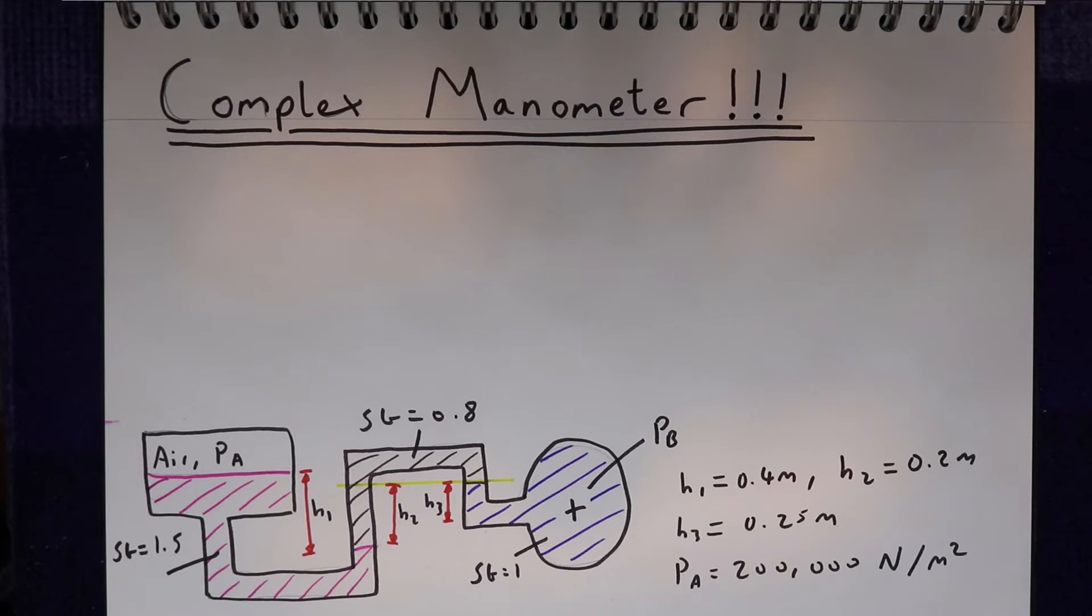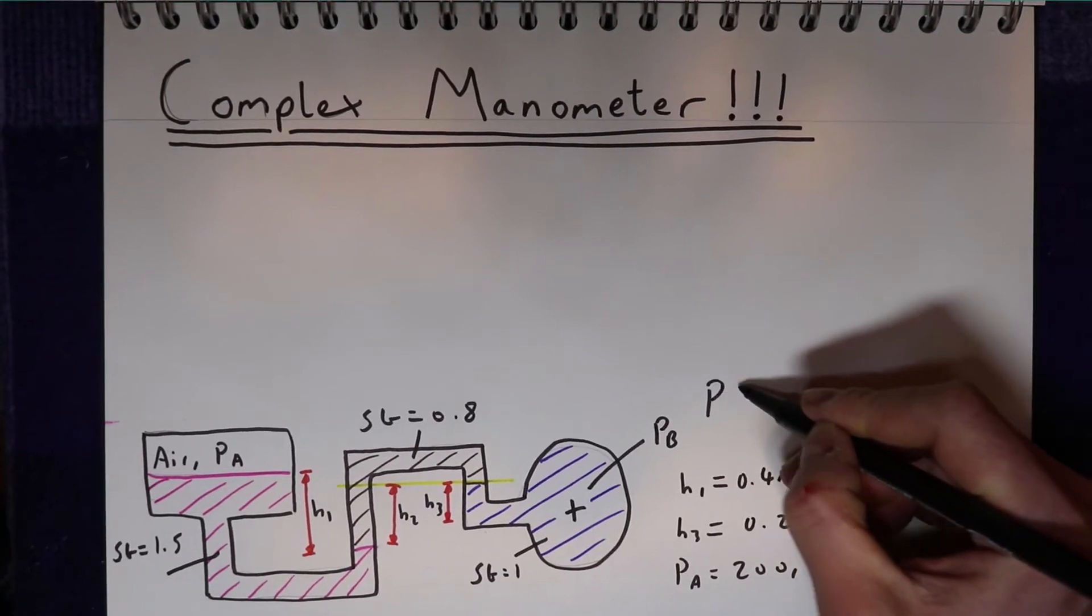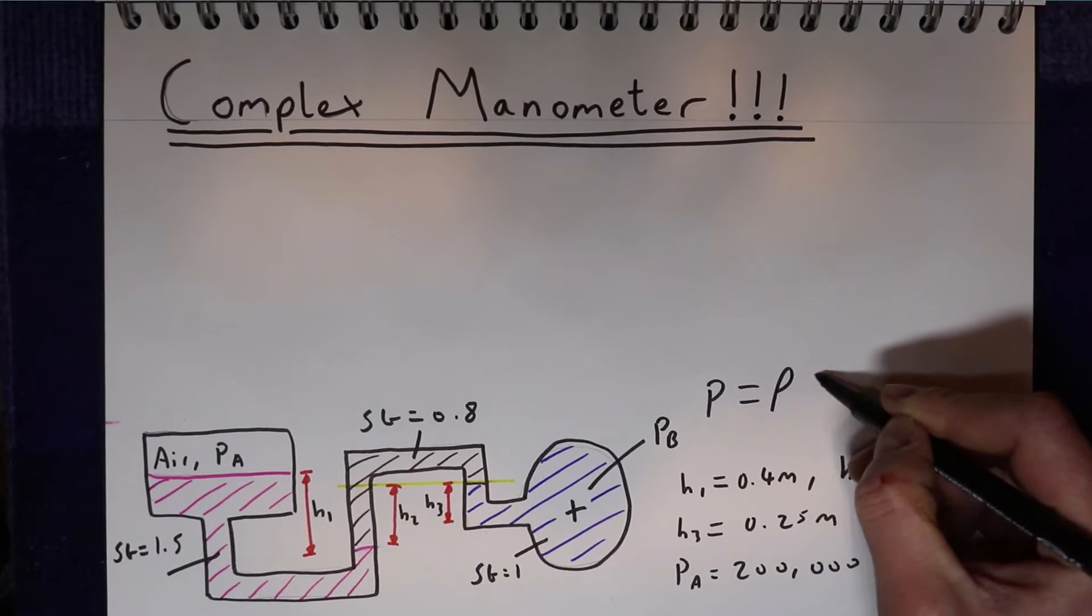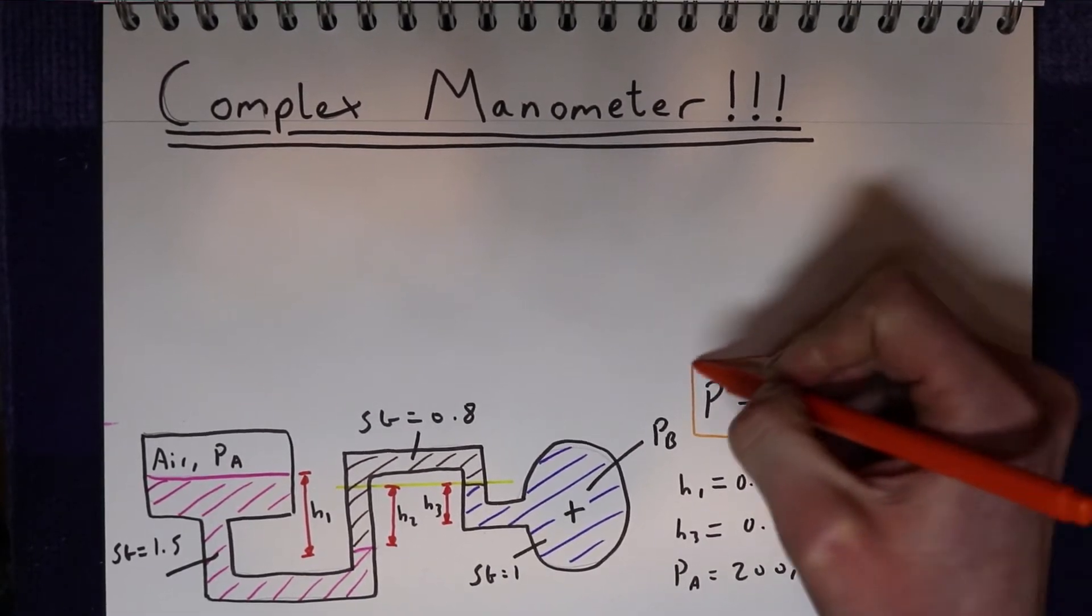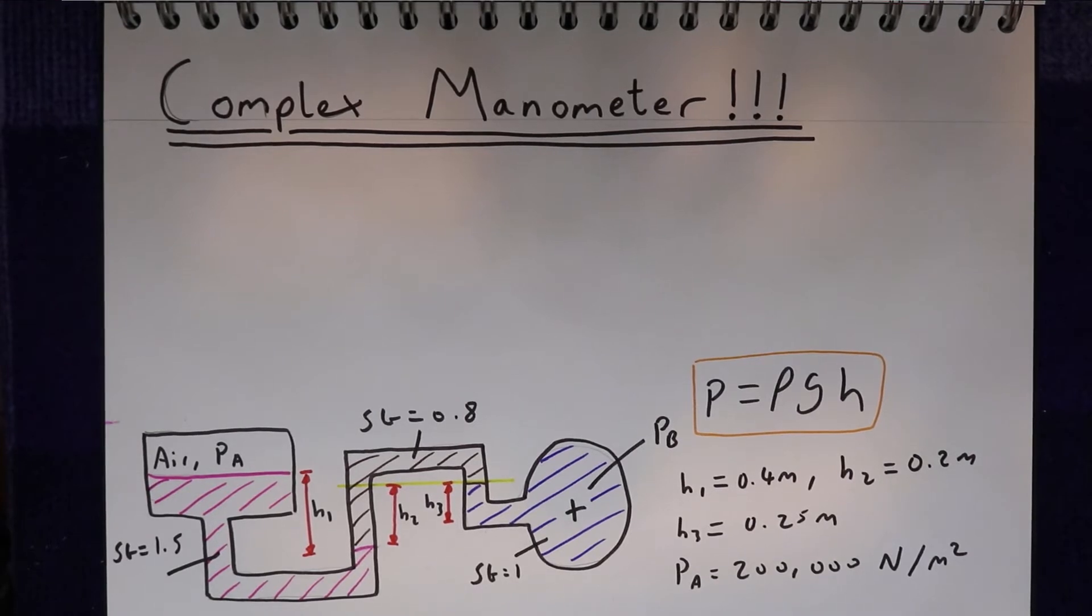So the golden rule that we're going to use to solve this problem is that pressure equals the density of fluid times gravity times the height of fluid. And what we're going to do is use that rule to balance the forces along this line.